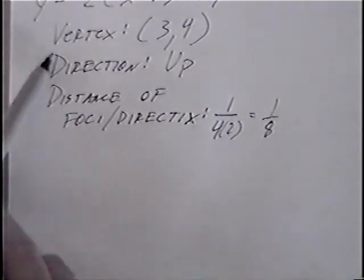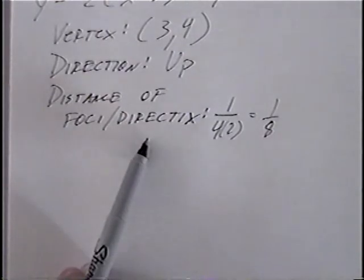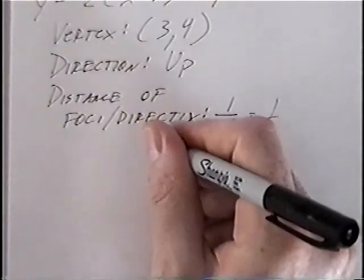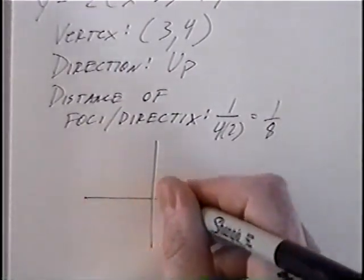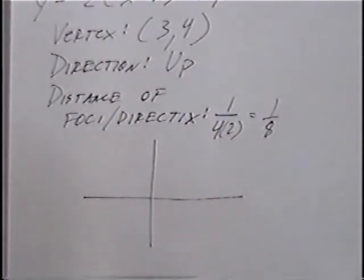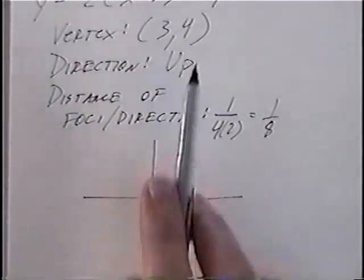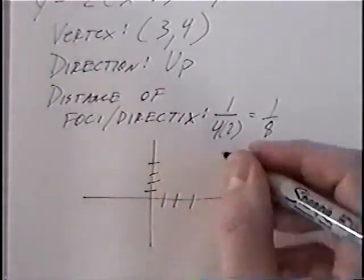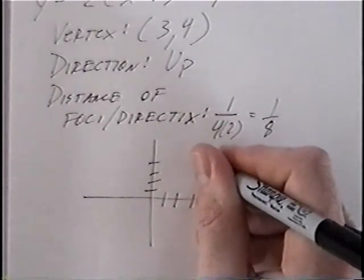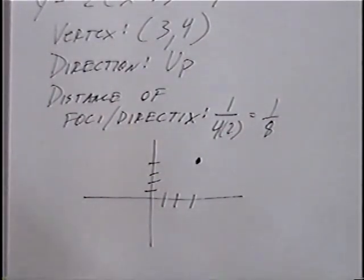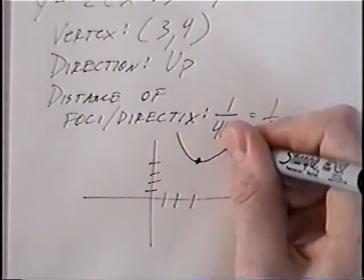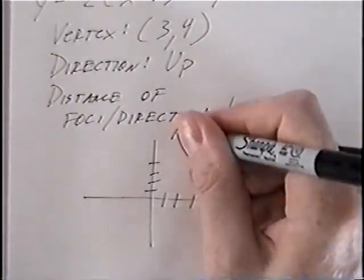From here, after we have the vertex, the direction, and the distance of the foci and directrix, we can draw the graph to graph the parabola. The vertex would be at (3, 4). The direction would go up, so we'll sketch a parabola going through the vertex, pointing up.